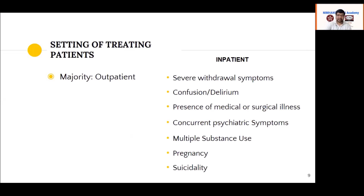About 95% of alcohol withdrawal cases can be treated in an outpatient setup. However, inpatient treatment is indicated for severe withdrawal symptoms, high CIWA-Ar score, existing confusion or delirium tremens, significant comorbid physical, surgical, or psychiatric illness such as psychosis or bipolar disorder, polysubstance use, pregnancy, or suicidality. The reason for careful management is that severe alcohol withdrawal — unlike opioid or cannabis withdrawal — can actually be fatal.